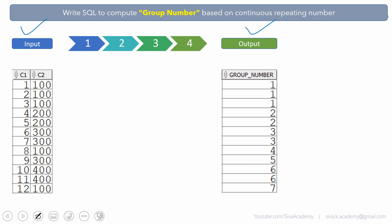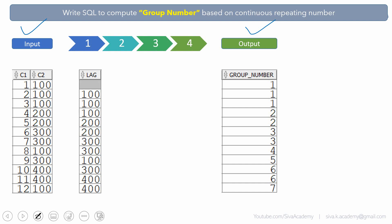Let me take you through the 4 steps. The very first step is to compute the lag of the C2 column. Using the lag analytical function, we can bring the previous row's value into the next row or any subsequent row. In this case, I am using the lag function to bring the current row's value into its next row — so the first row's value comes into the second row, the second row's value into the third row, and so on.